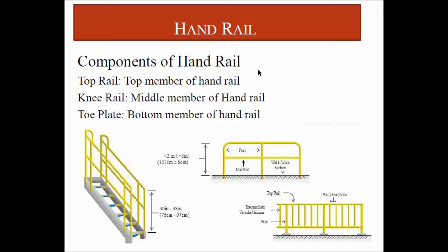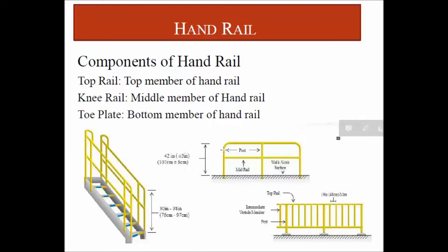In this video I would like to explain handrails. This is a simple example showing handrails. The top member is called the top rail, the middle member is called the knee rail or mid rail, and the bottom member is the toe plate. The toe plate is found in this area. The vertical support is called the post.